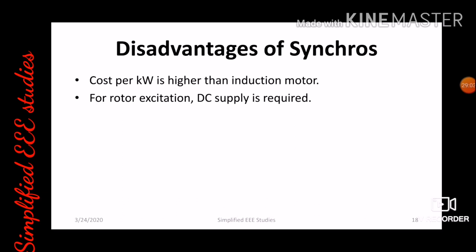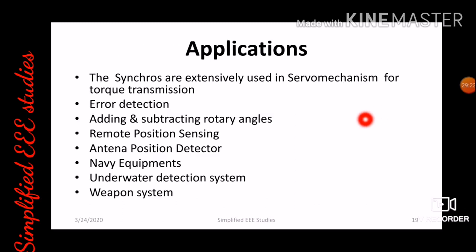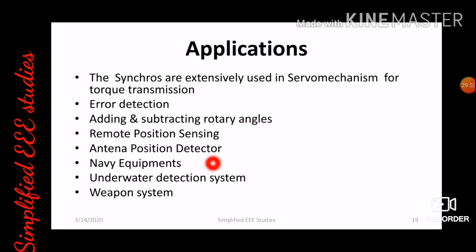The drawbacks of synchro are: cost per kilowatt is higher than an induction motor, so economically it is not feasible in some conditions; and for rotor excitation, DC supply is required. Applications of synchro include: servo mechanisms for torque transmission, error detection, position control, adding and subtracting rotary angles, remote position sensing, antenna position dictating navigation equipment, underwater detection systems, and weapon systems.